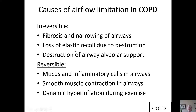The causes of airflow limitation can be divided into reversible and irreversible. Irreversible components include fibrosis and narrowing of the airways, loss of elastic recoil due to lung destruction, and destruction of the alveolar support of the airways leading to further airway narrowing. Reversible components include mucus and inflammatory cells within the airways, smooth muscle contraction in the airways which can be reversed by bronchodilators, and dynamic hyperinflation during exercise, which can be reversed when you stop exercising.